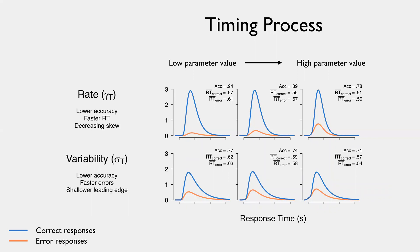we see we have lower accuracy, faster RT, and reduced skew of the RT distribution. We can also change the variability of the timing accumulation process. And so as the within trial, moment-to-moment variability of the timer becomes larger,